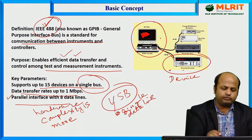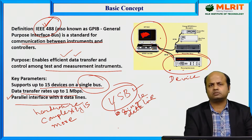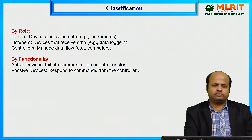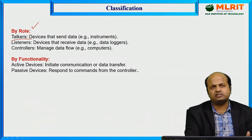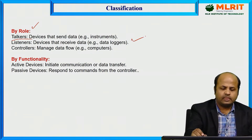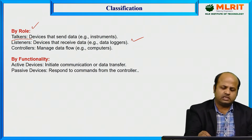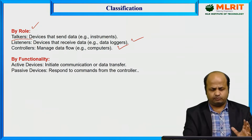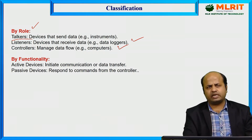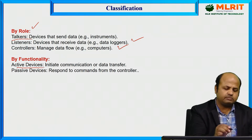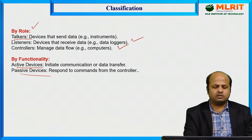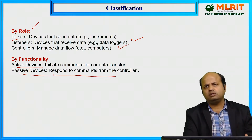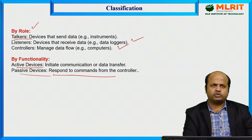So, how do we classify IEEE 488? By its role, we can classify it as: a talker device that will send the data, a listener device that will receive the data, and a controller that will manage the data flow — for example, a computer. By functionality, we can classify active devices and passive devices. Active devices will initiate the communication or data transfer, while passive devices will respond to commands from the controllers.